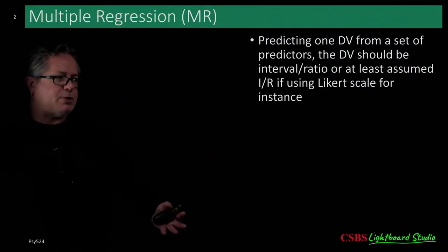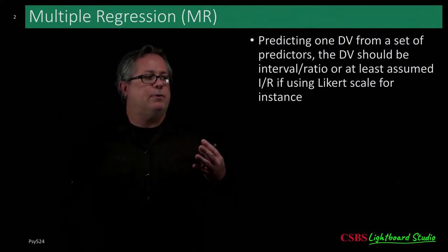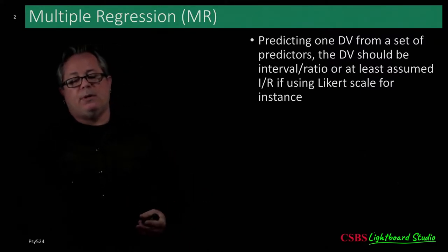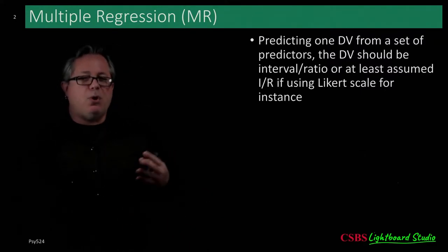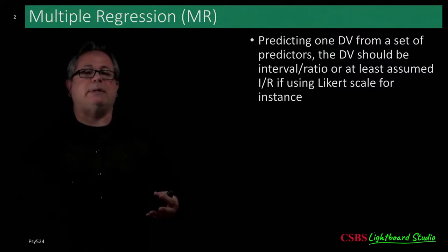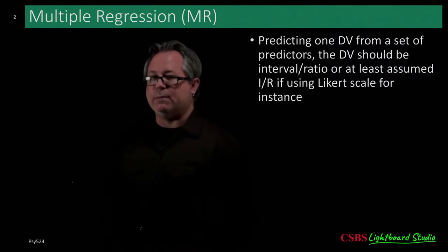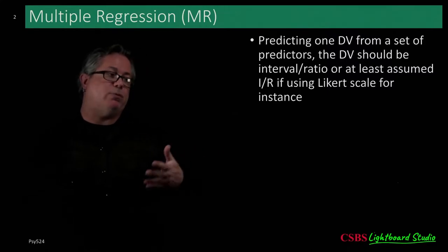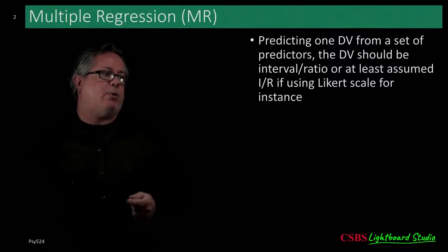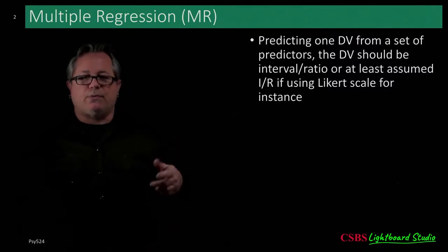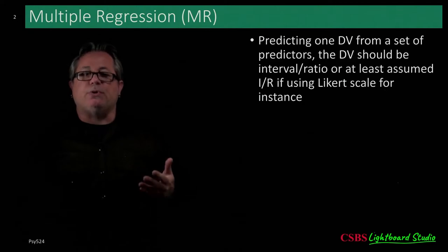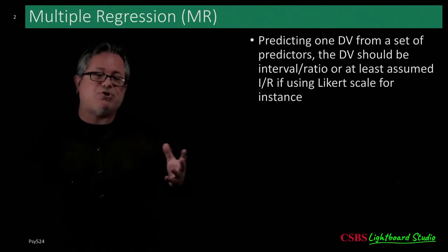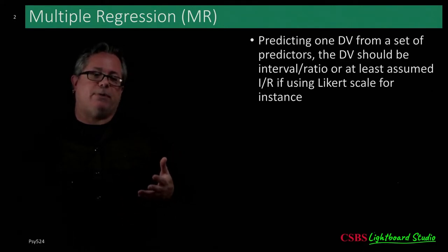Multiple regression is straightforward: you have one dependent variable and a bunch of predictors. There's no technical limit on the number of predictors you can have — as many as conceivable for your design. However, there is a diminishing returns effect; the more predictors you add, they can eventually start to weaken the model.